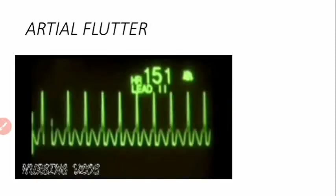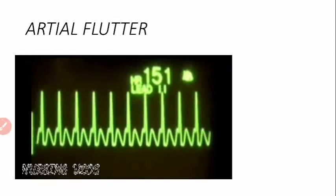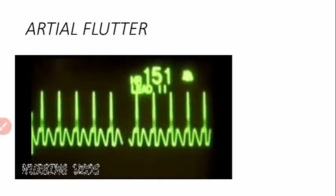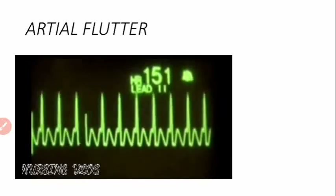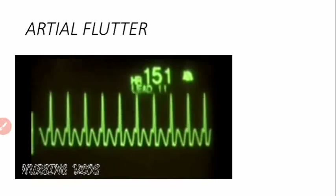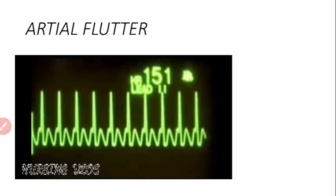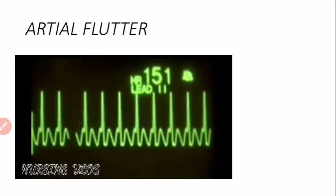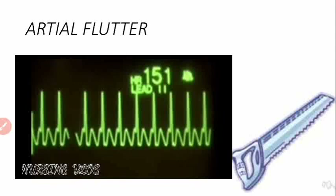In atrial flutter ECG, atrial flutter results from abnormal electrical signals inside the upper chambers of the heart — the atria — beating extra fast at about 250 to 400 beats per minute. The main characteristic of atrial flutter is a sawtooth wave pattern and it is a usually regular rhythm. Instead of atrial fibrillation's irregularly irregular rhythm, atrial flutter has a regular rhythm with sawtooth flutter waves. Here we also lose the isoelectric baseline, but the regular RR interval is present.